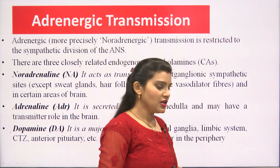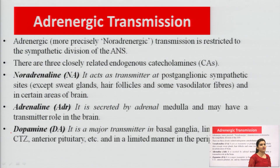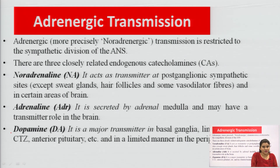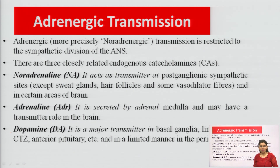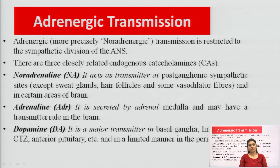First, let us discuss about adrenergic transmission and the neurotransmitters of the adrenergic nervous system. These drugs are also known as sympathomimetic drugs, because the major neurotransmitter of the sympathetic nervous system is adrenaline or noradrenaline. These drugs, which are copies of adrenaline, are known as sympathomimetic drugs because they mimic the effect of adrenaline in our body.